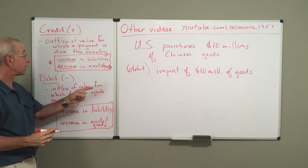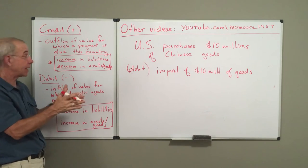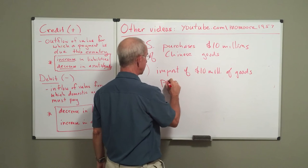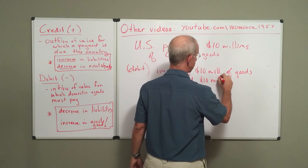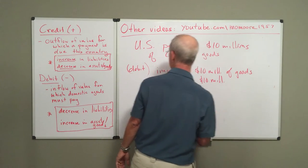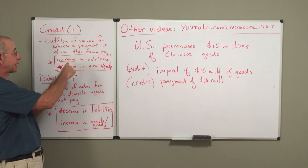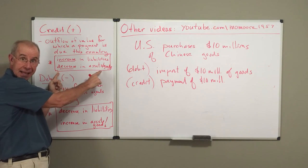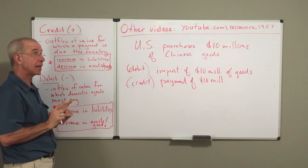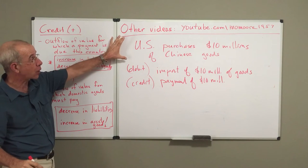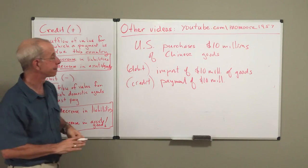The credit part is that the United States will now have to ship a check for $10 million to the Chinese. So the payment of $10 million is going to show up as a credit. That is a decrease in the assets in the United States — it's $10 million worth of a checking account that is now transferred to the Chinese. So the single purchase of $10 million worth of goods has both a debit and a credit.